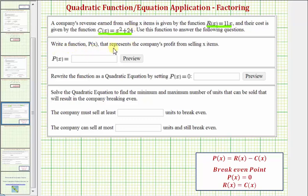We want to write a function P(x) that represents the company's profit from selling x items. The profit function P(x) equals the revenue function R(x) minus the cost function C(x).